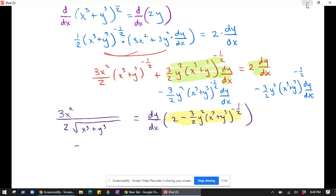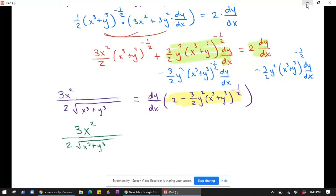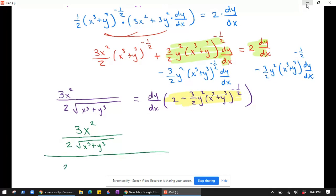So let's see, we'll just write what we get and then clean it up after. So it's 3x squared over 2 square root of x cubed plus y cubed, all of that gets divided by 2 minus 3/2 y squared times x cubed plus y cubed to the negative 1/2. That is equal to dy/dx.